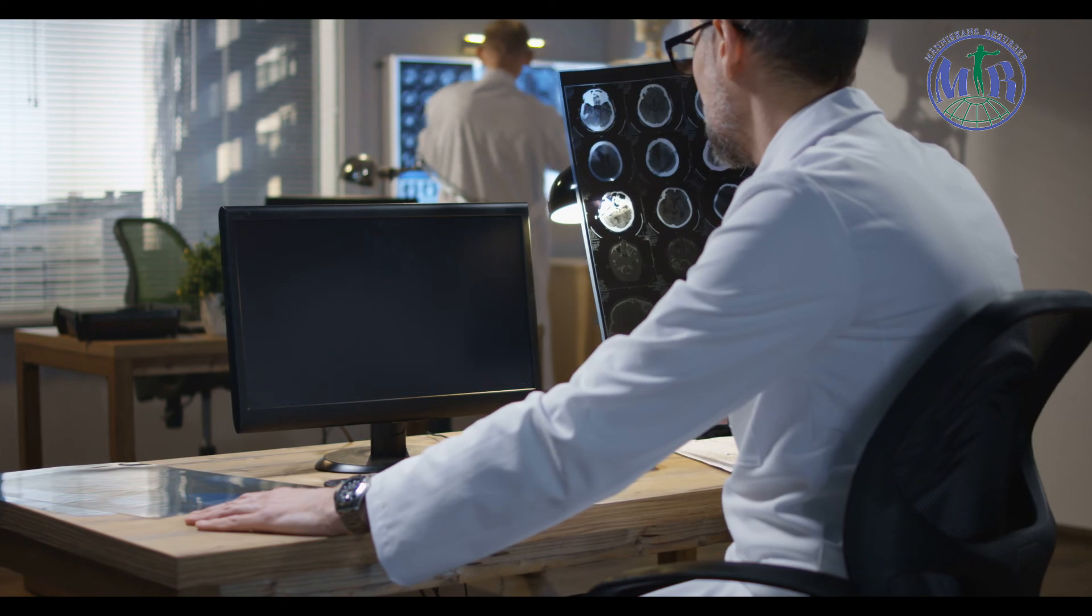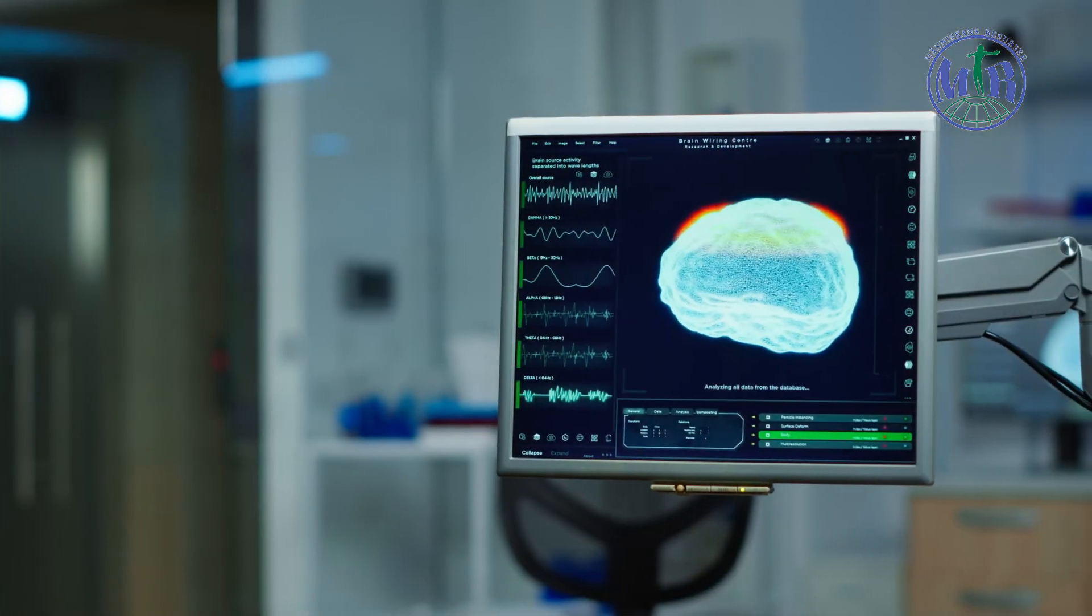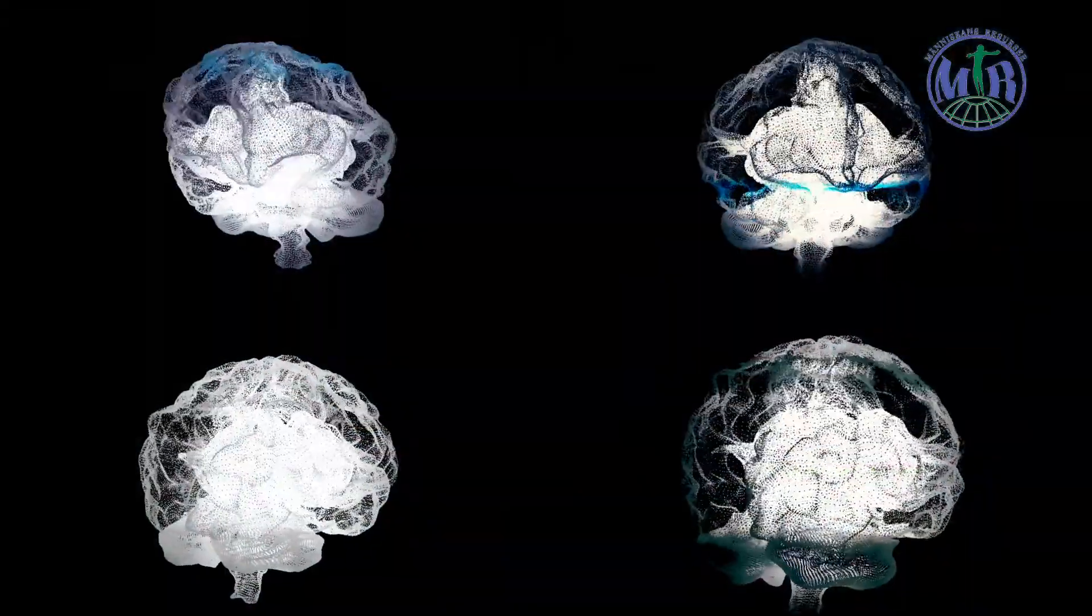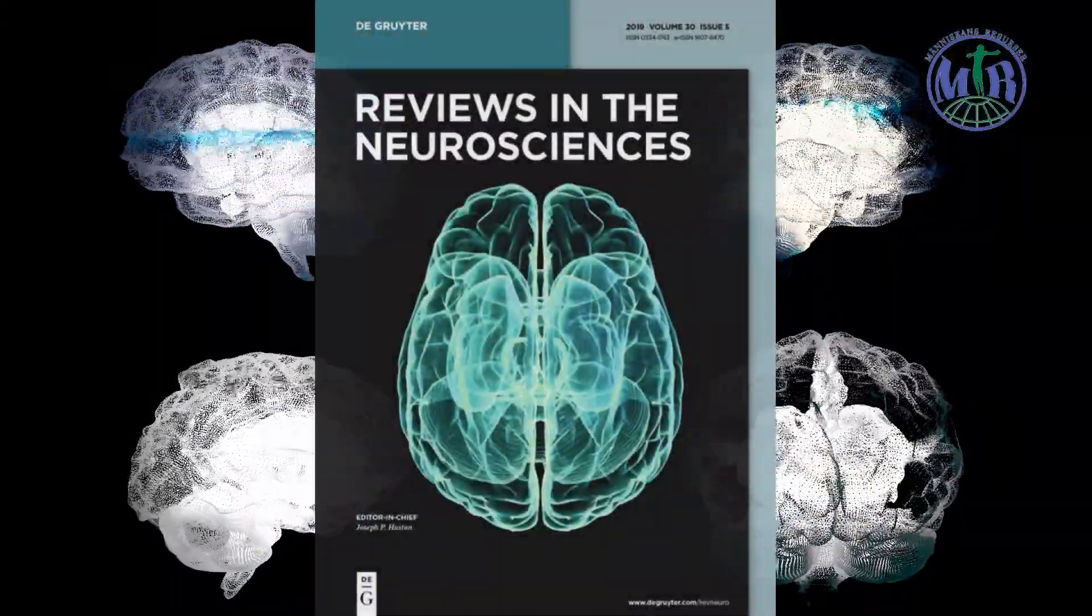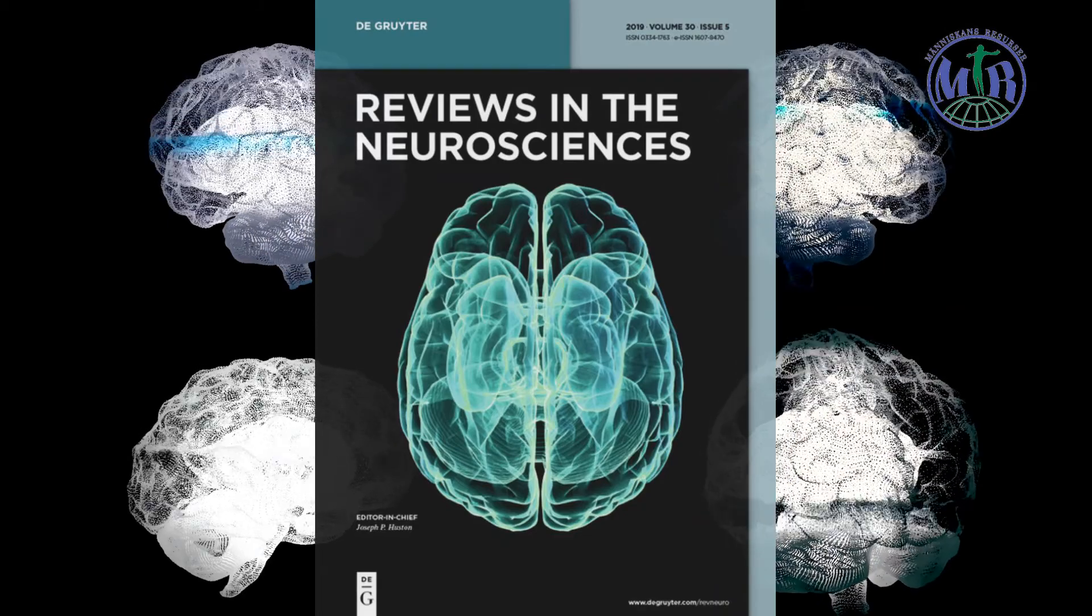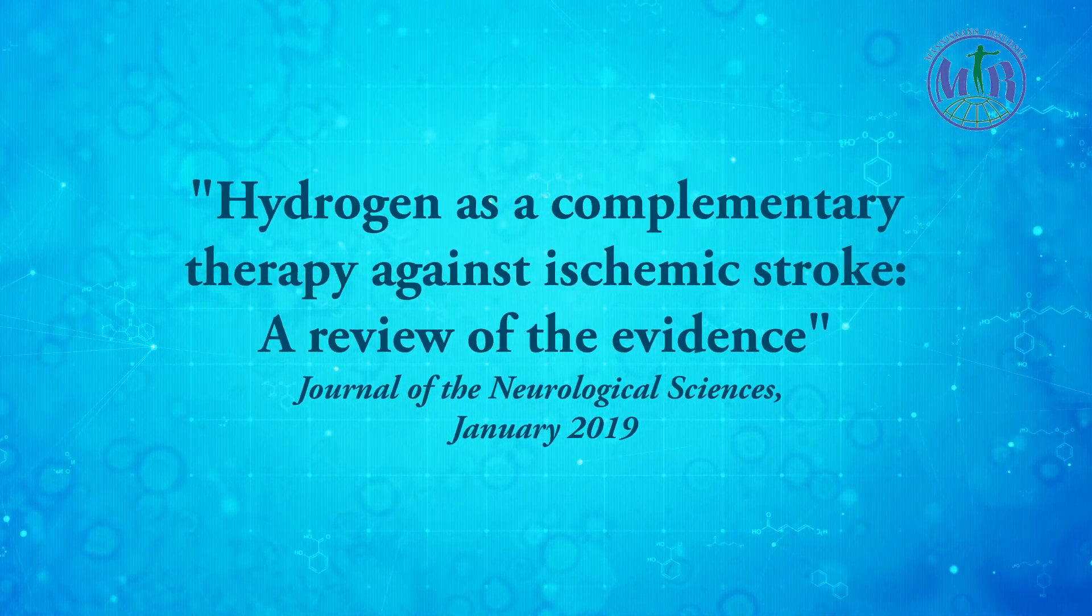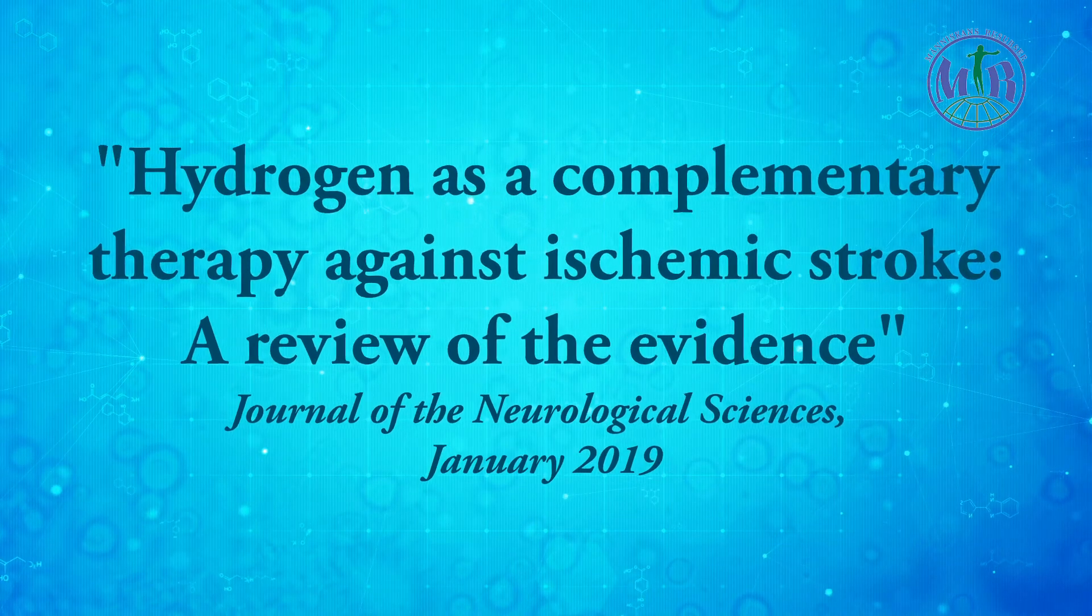After this study, massive research began on the protective properties of hydrogen for the brain, and a scientific review was published in 2019 in the Journal of Neurological Sciences. Hydrogen as a complementary therapy against ischemic stroke: A review of the evidence.